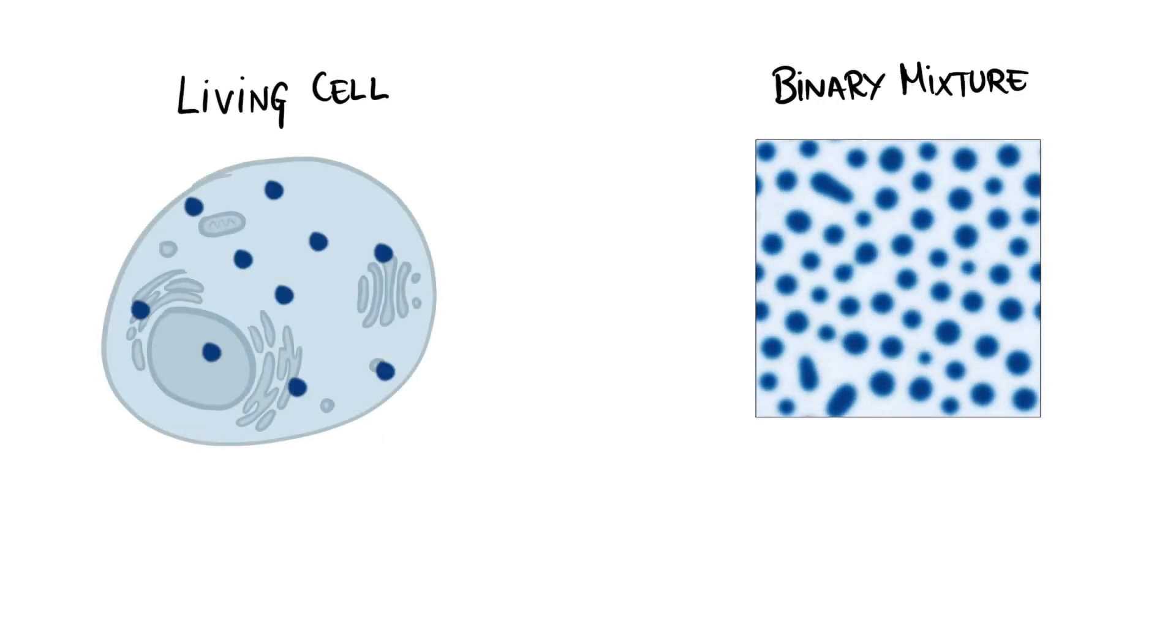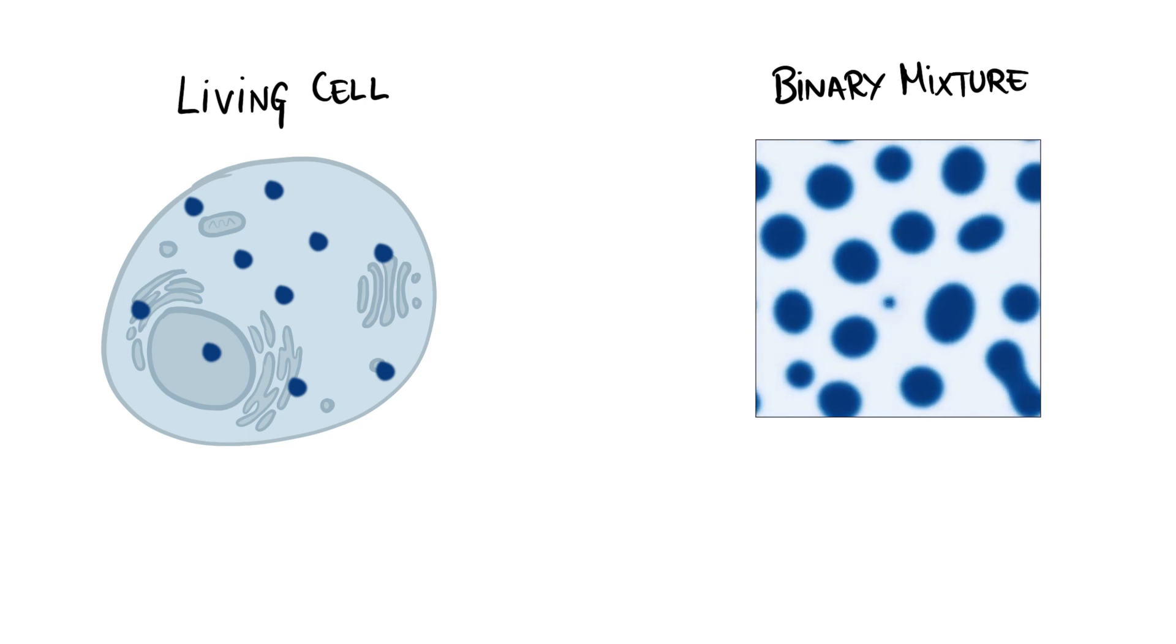We wanted to understand phases in cells and we've seen a simple example of a binary mixture. But is this how phase separation works in cells?